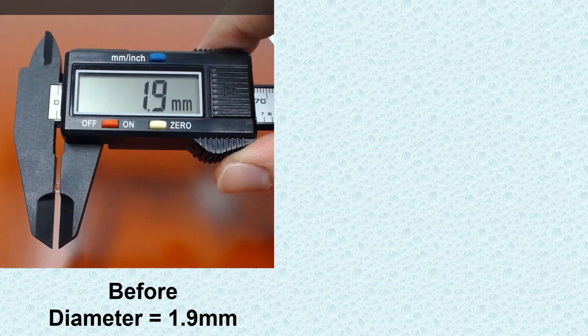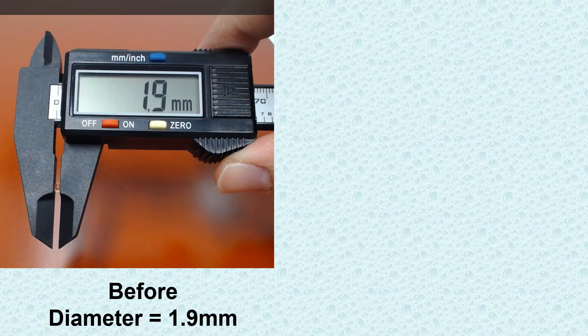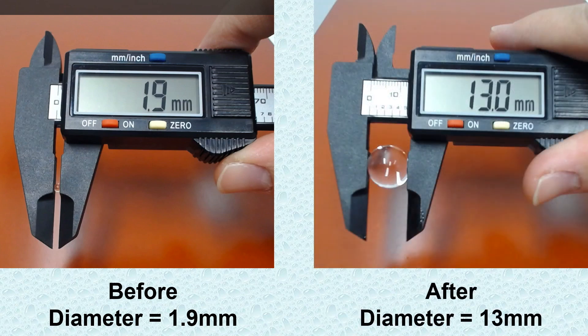The beads were about 1.9 mm in diameter at the beginning, and they grew to about 13 mm in diameter after soaking in water, with a size increase of more than 6 times.